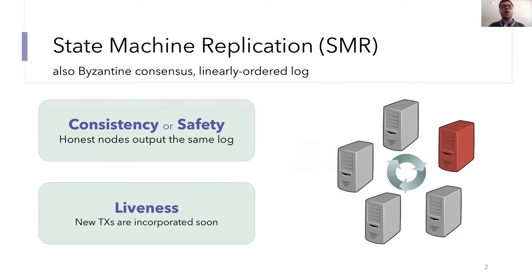There's two properties that consensus protocols need to satisfy: consistency and liveness. Consistency ensures that all of the honest nodes have the same view of the linearly ordered log. And liveness ensures that the system makes progress, so basically, any fresh transactions that are input by clients are incorporated into this log soon.